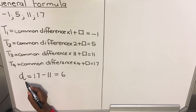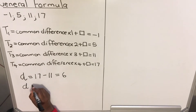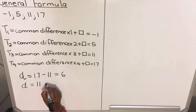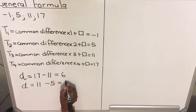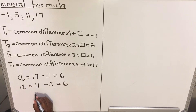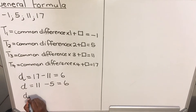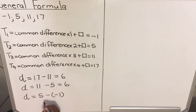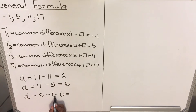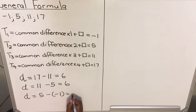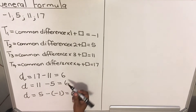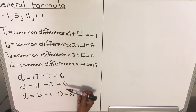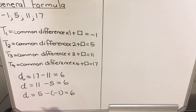The common difference must be verified — you don't do it just once. 11 minus 5 gives 6. Then 5 minus negative 1: negative times negative is positive, so 5 plus 1 gives 6. We get 6 every time, so 6 is our common difference.